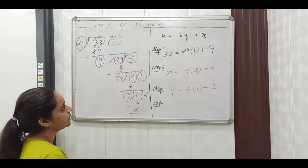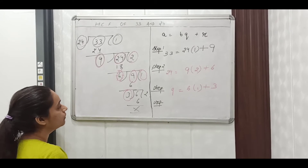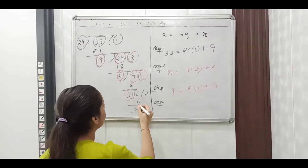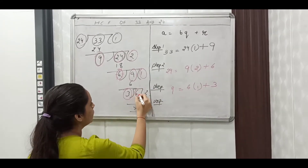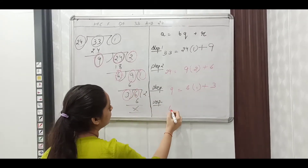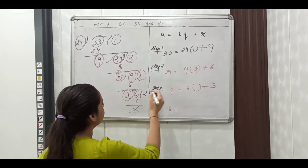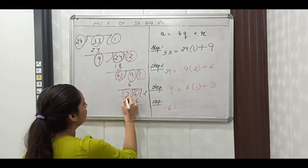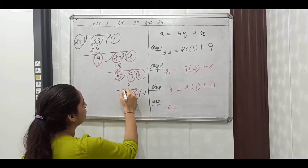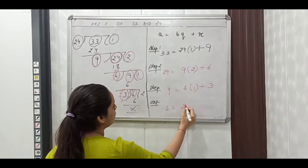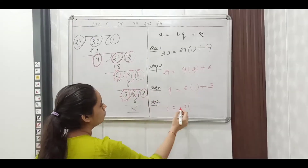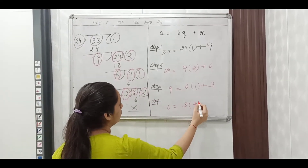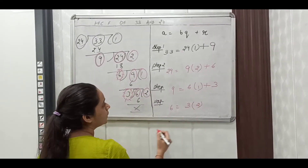In step 4, we have A is equal to 6, B is equal to 3, Q is equal to 2, and R is equal to 0.